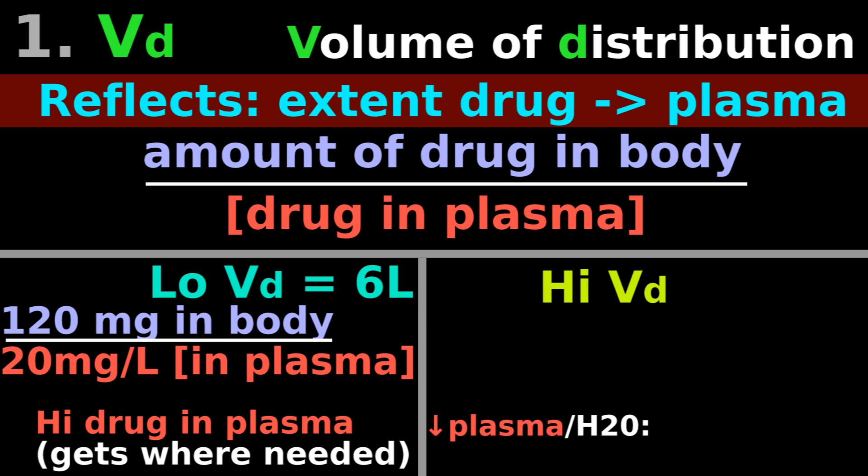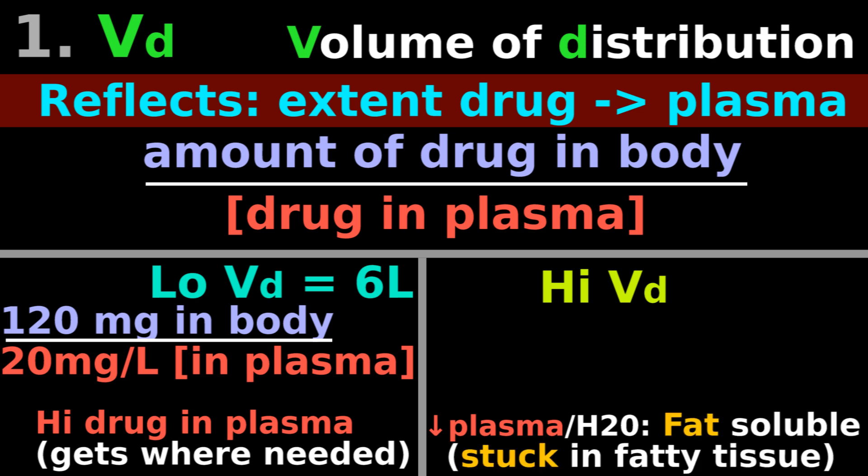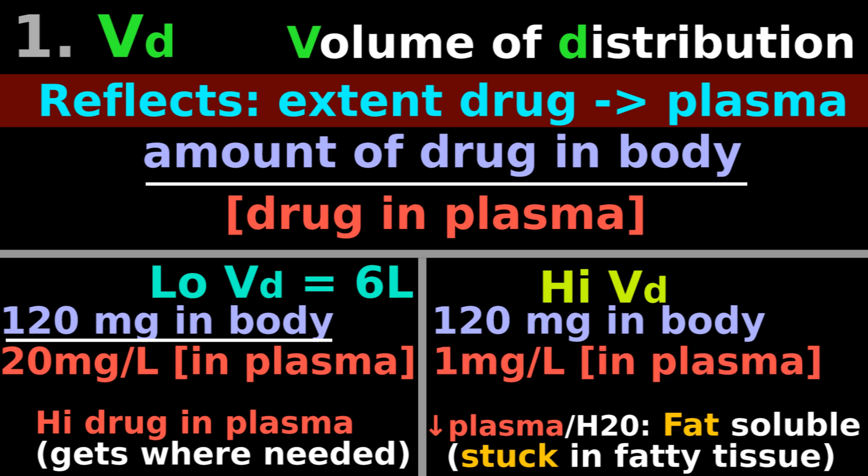A higher VD suggests that there is less drug floating in watery plasma, maybe because the drug is fat soluble and stuck in fatty tissues. If you swallow 120 mg of drug and there is only 1 mg per liter of drug in plasma, then your VD is 120 liters.